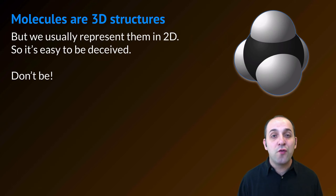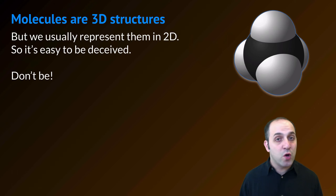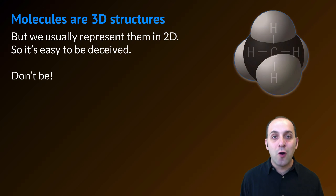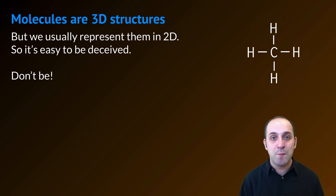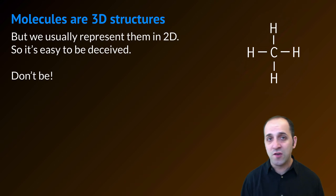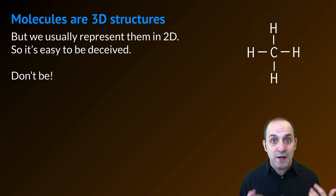It's important to understand that molecules are three-dimensional structures. This can be problematic because we're generally representing them in two dimensions, so it's really easy to be deceived. For instance, this is a methane molecule, and if I wanted to represent this, I would normally represent it in this flat two-dimensional shape, which basically removes the notion of three dimensions from our overall conception. It's really important to keep that in your head — even though we're drawing things in two dimensions all the time, we're really representing three-dimensional structures. So I'm going to need you to put on your three-dimension imagination goggles as we go into this discussion.